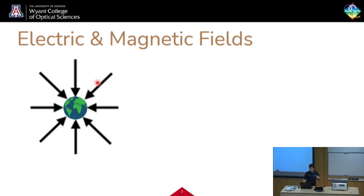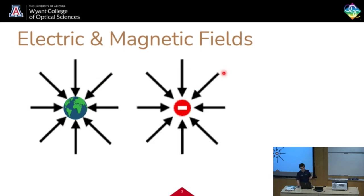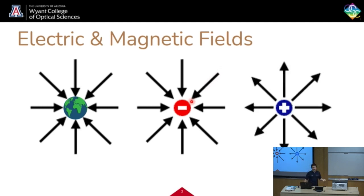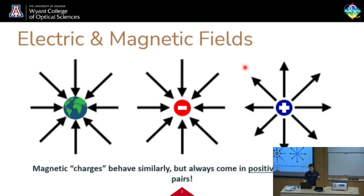Something with a negative electric charge would look very similar, with electric field lines pointing towards the center. If there were a positive charge, it would follow these lines towards the center. Something with a positive charge would be very similar, but the opposite — a positive charge here would move away along these lines. Magnetic fields are very similar, or magnetic charges behave very similarly, but they always come in positive and negative pairs, because there isn't such a thing as a magnetic charge.